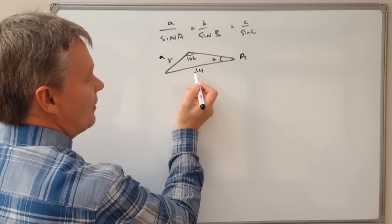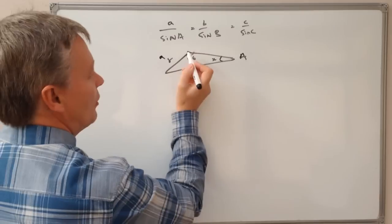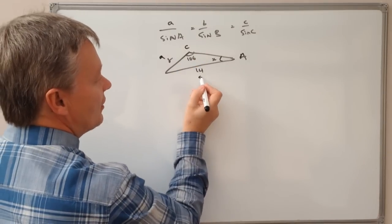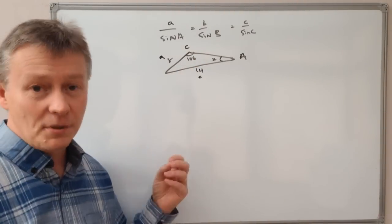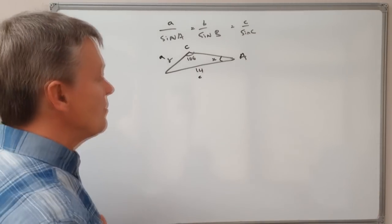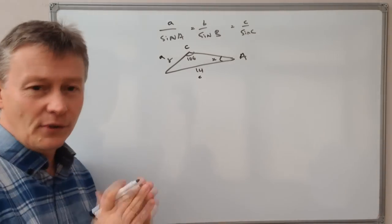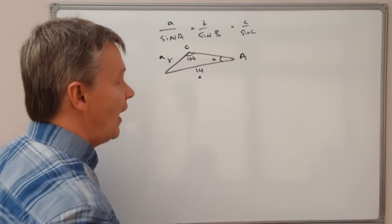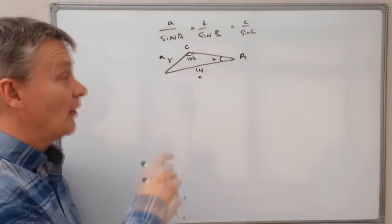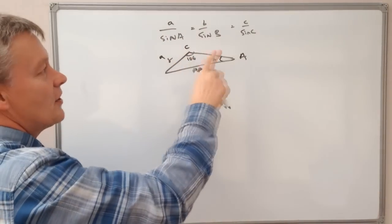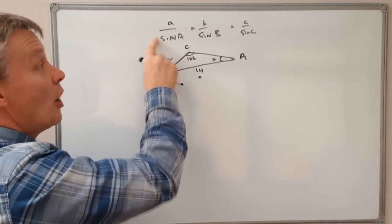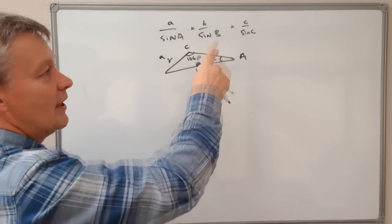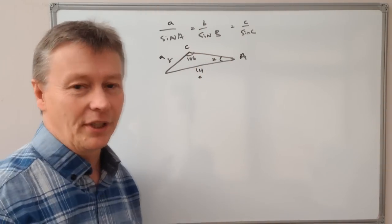In this particular case I'm going to call this C and opposite that is going to be small c. So what it allows me to do then is to put all these into a relationship to calculate this value of X. I did mention earlier on that this is exactly the same as saying sine A over A and sine B over B and sine C over C. So that's what I'm going to use.